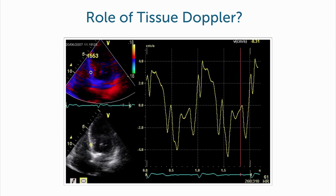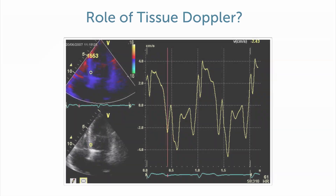Why do we actually need speckle tracking? Because we have a methodology at hand which already allows us to look at things such as velocity, strain rate, and strain — namely tissue Doppler. Does tissue Doppler still have a role now that we have speckle tracking? There is still a role for tissue Doppler, especially in the analysis of diastolic function, but for systolic function we prefer strain analysis. Strain gives us information on global function, whereas tissue Doppler gives us information on regional myocardial function.